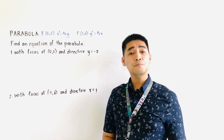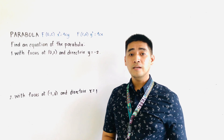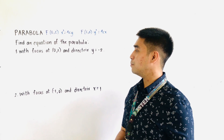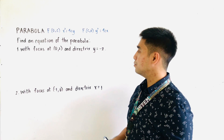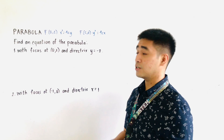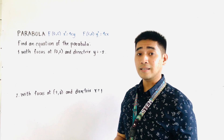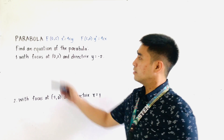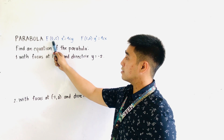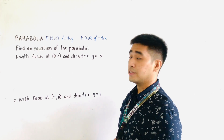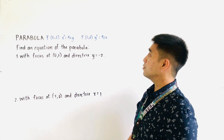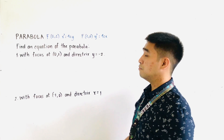We now have two problems to illustrate the standard equation of a parabola. For number one, find an equation of the parabola with focus at (0, 2) and directrix y = negative 2. We are asked to find the standard equation with vertex at the origin. If the focus is located at (0, c), our equation would be x² = 4cy. But if our focus is located at (c, 0), our equation would be y² = 4cx.